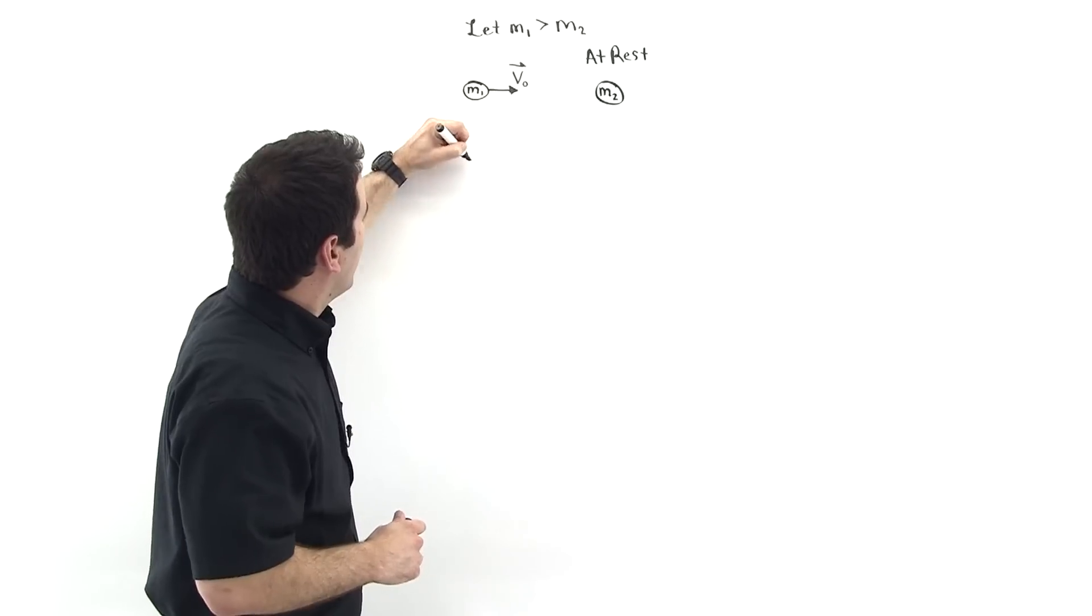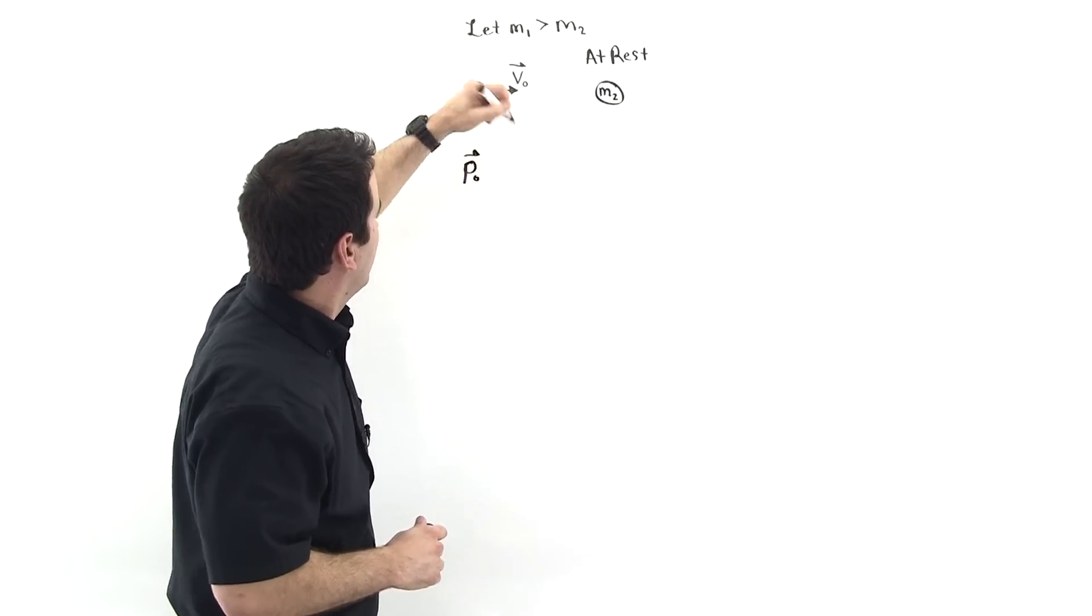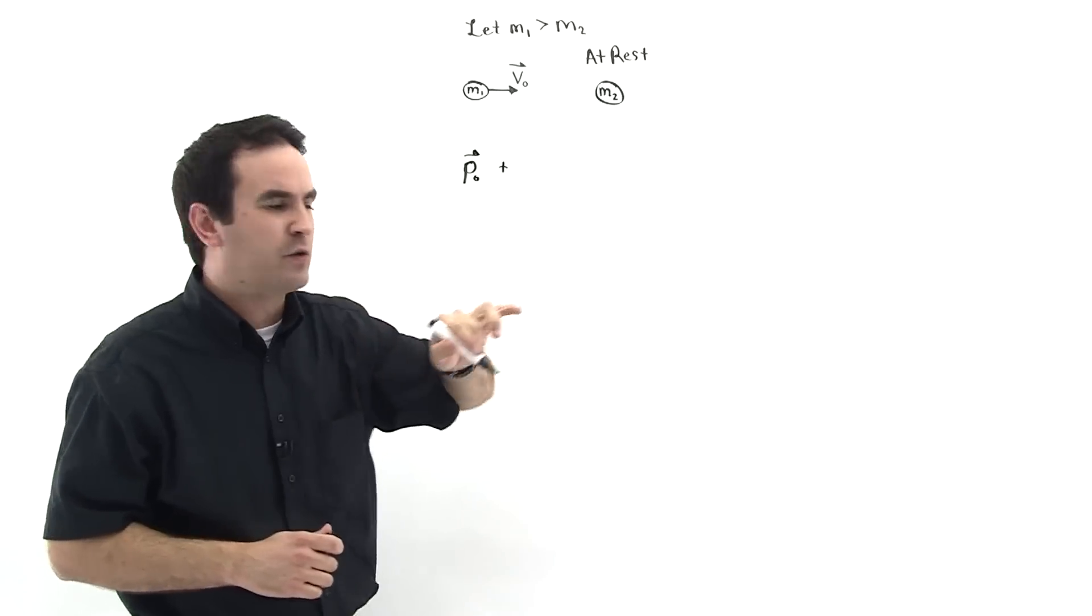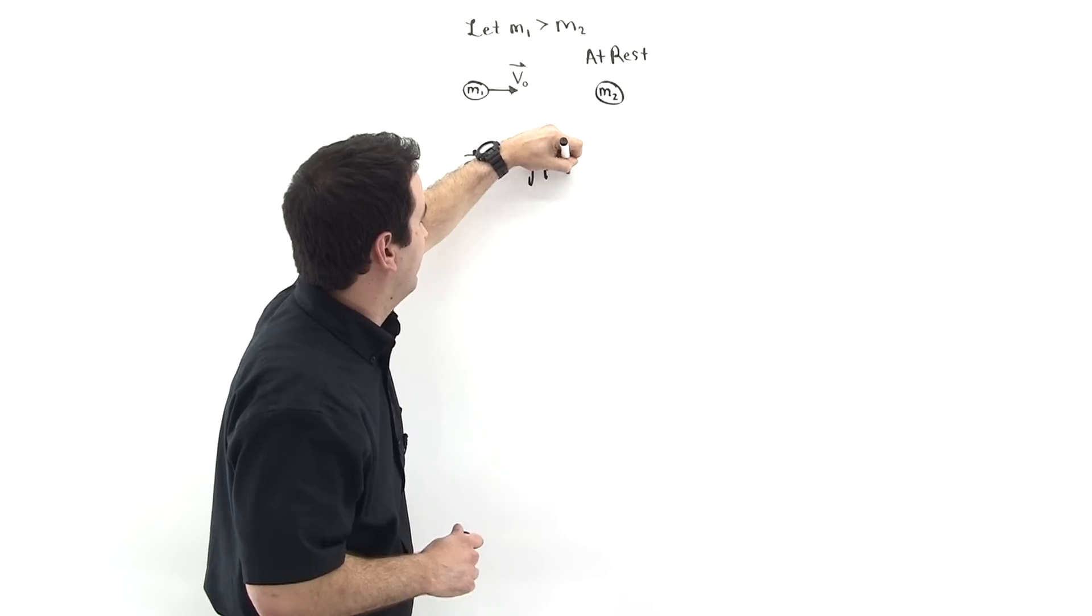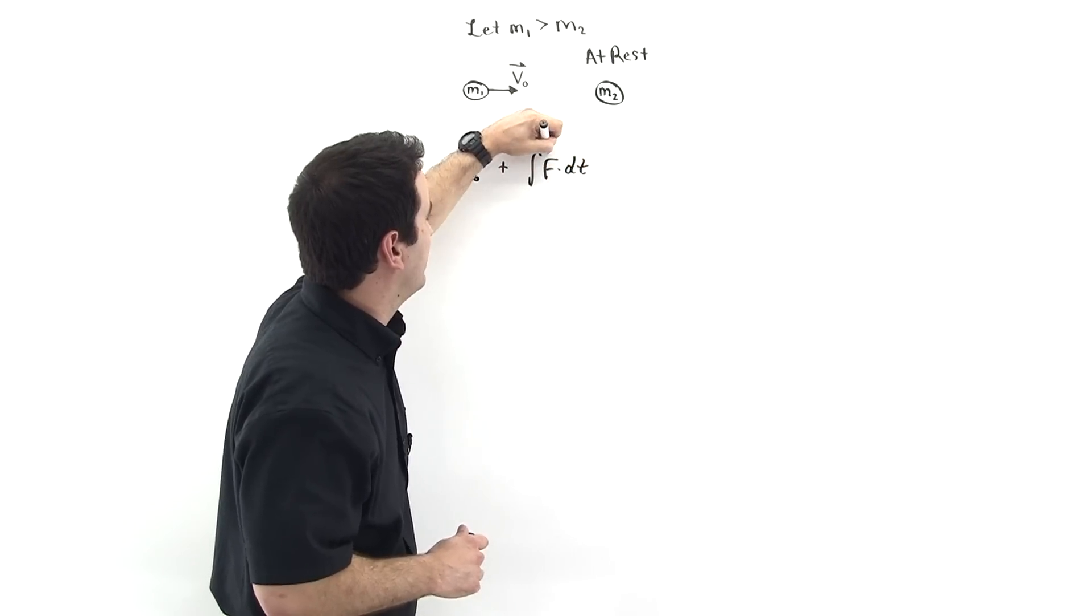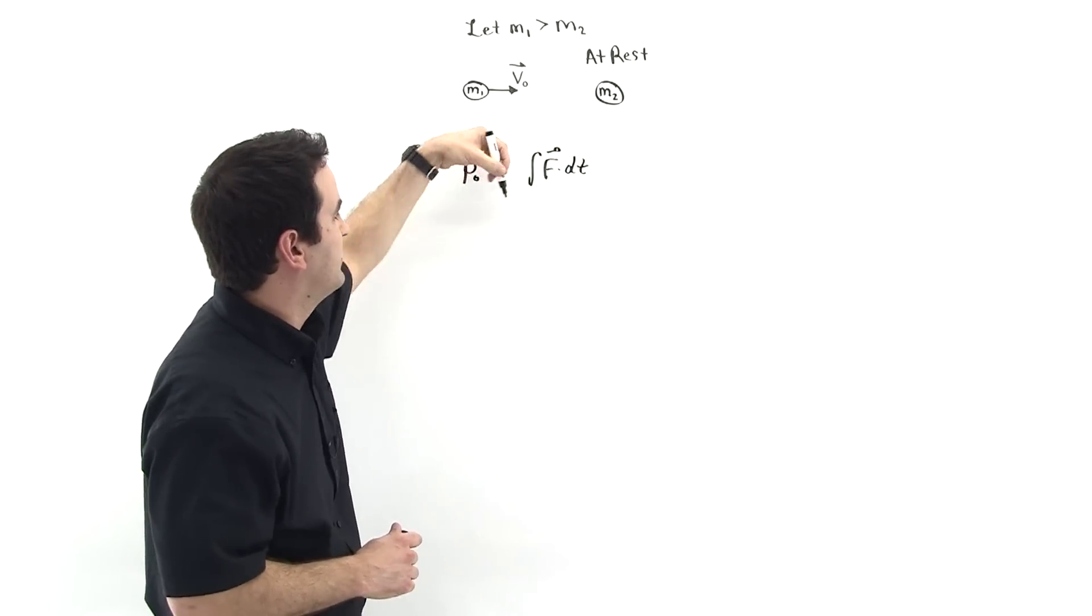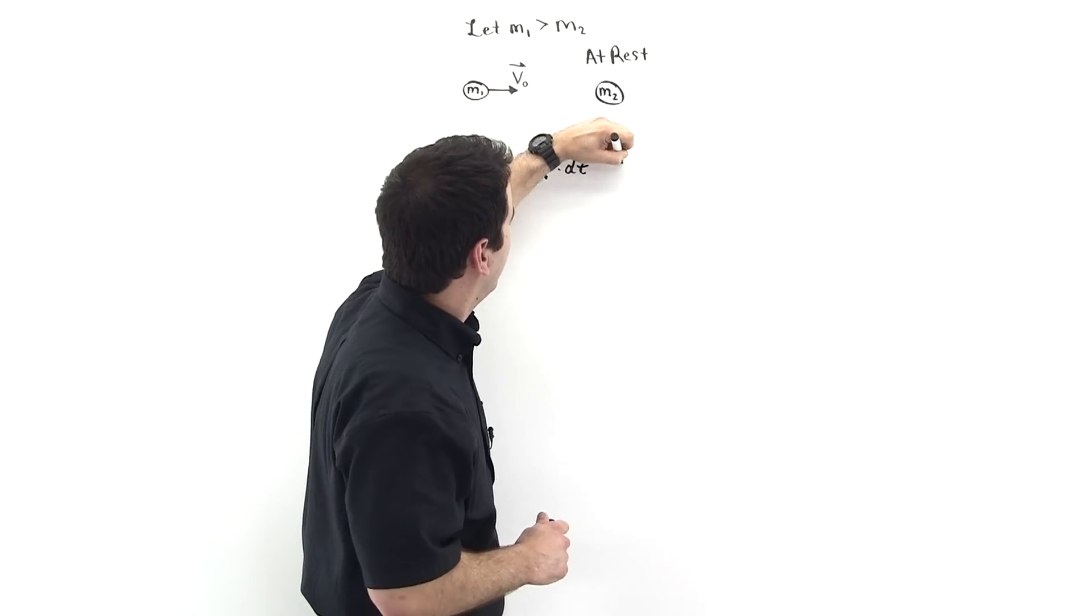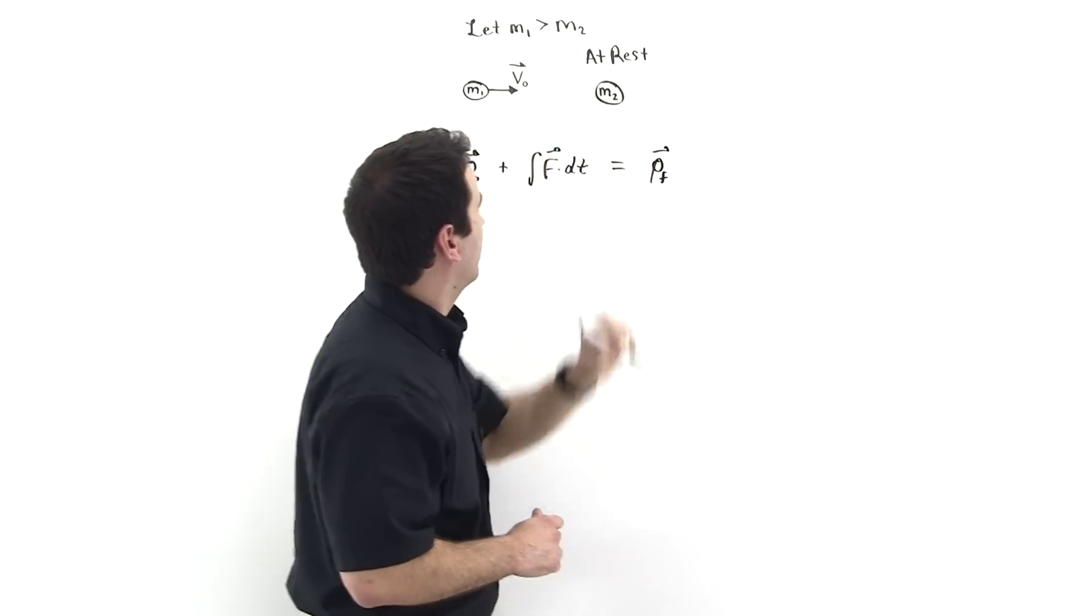So our initial equation, let's just write it down. P-naught plus, and then we have that integral term, right? So let's just represent it, let's go ahead and put it like this. But for the non-calculus people, don't sweat it, this is just f average times delta t, right? From t-zero to t-final, which we'll leave off for brevity, and this is equal to p-final.